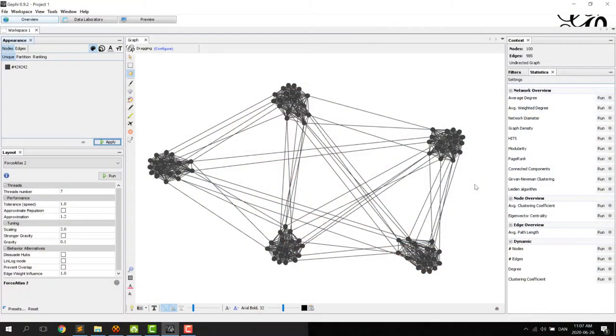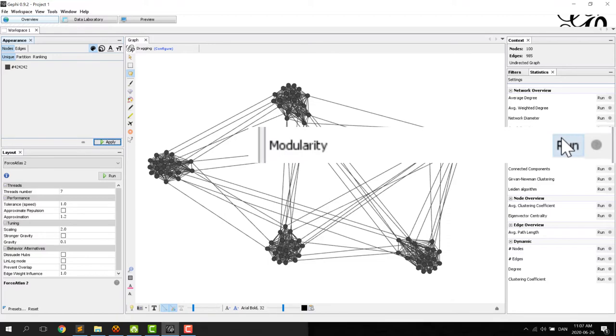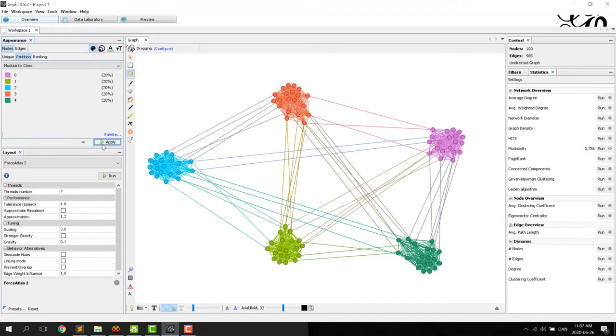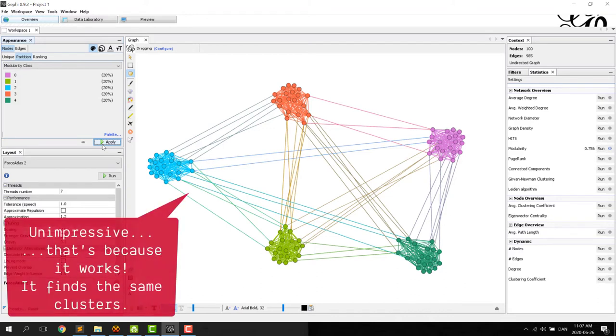To do that, Gephi has some clustering algorithms. And their purpose is to find the clusters according to the topology. Let's pretend we don't know what the clusters are and we try to find them. The first algorithm we have is modularity. Those are the clusters found by the modularity clustering algorithm. It uses an implementation called Louvain.